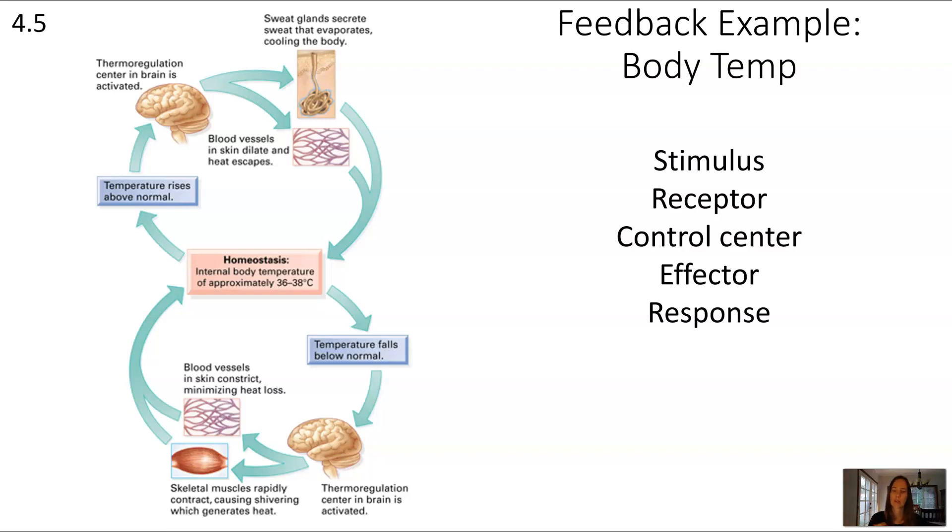The receptor and the control center in this case are both going to be in the brain. You don't need to know the specifics of that, but there's a thermoregulatory center in the brain that's activated. This then talks to or communicates with multiple effectors. In this case, it's showing sweat glands as well as blood vessels. Sweat glands secrete sweat that evaporates, which causes the body to cool. Blood vessels in the skin dilate, causing heat to escape. So the response in both of these cases is that the temperature comes down.